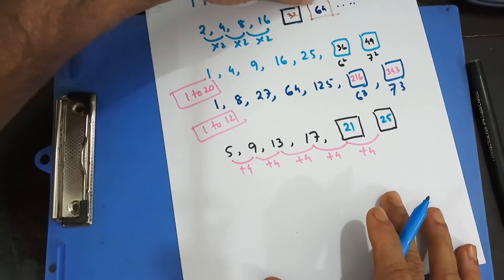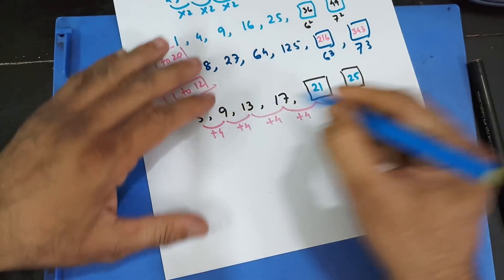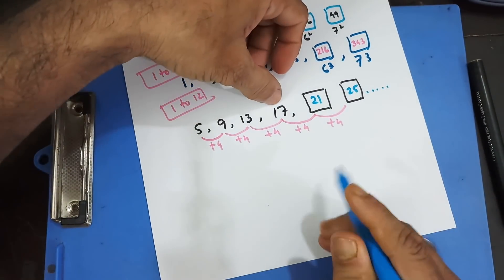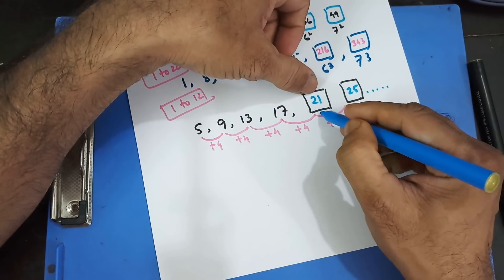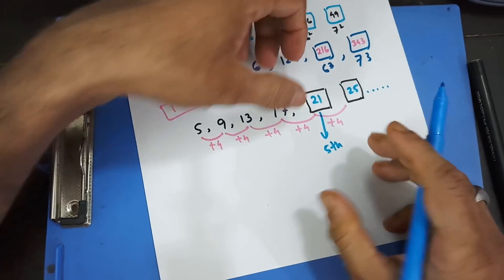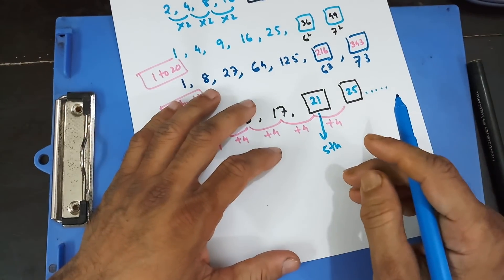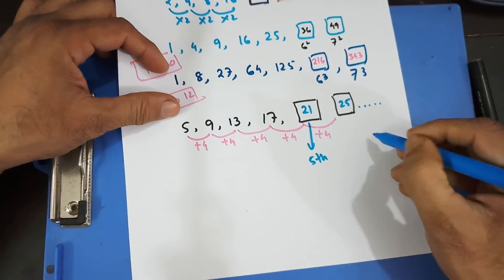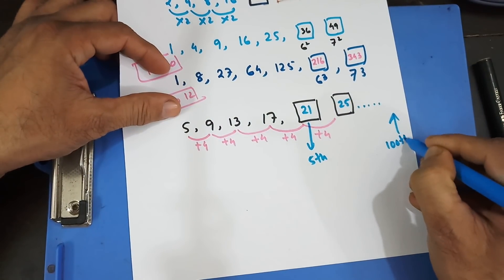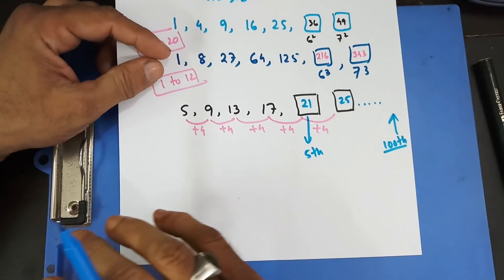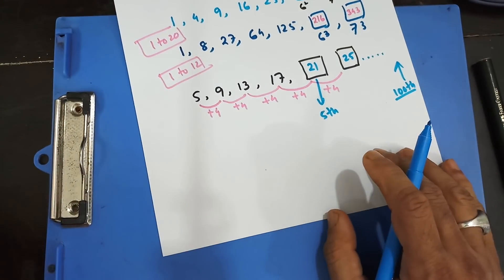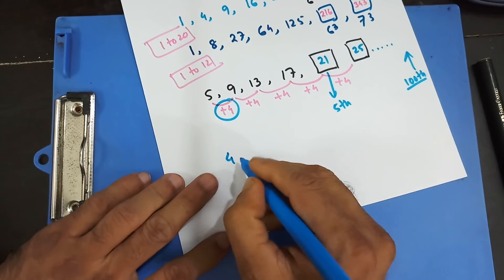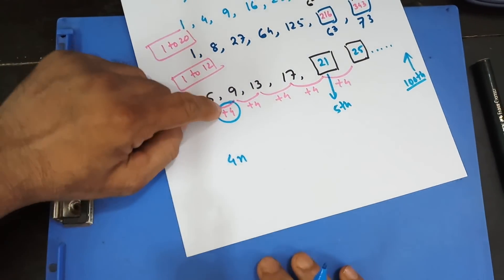But if the question asks you to find the nth term — because let's say there are so many other terms — if you want the 5th term or the 25th term or the 100th term, it would be very unwise to write down all the terms and count them. That's not convenient. So mathematicians find a formula. The easiest way: see the difference, take that difference, and multiply n with it. So we get 4n.